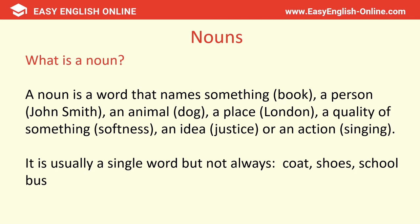Today we're going to continue with our eight-week challenge on the eight parts of speech, and we're going to talk about nouns. Nouns are everywhere — we use them all the time. But what are they and how do we use them? A noun is a word that names something, like a book, a person such as John Smith, an animal like a dog, a place like London, a quality like softness, an idea like justice, or an action like singing. It is usually a single word, but not always — like coat, shoes, or school bus.